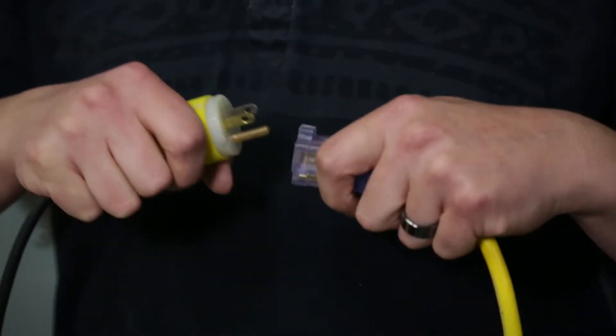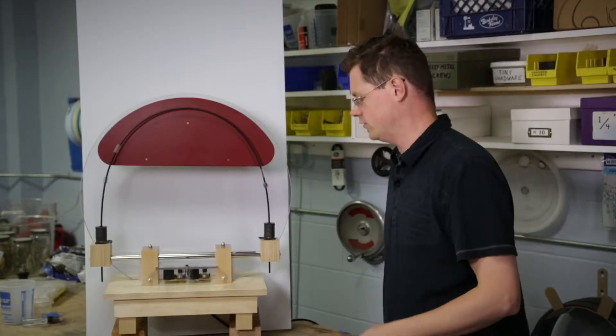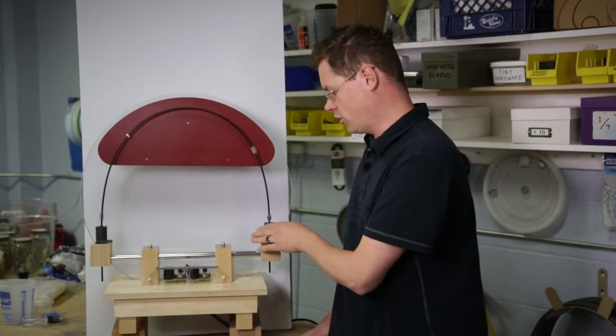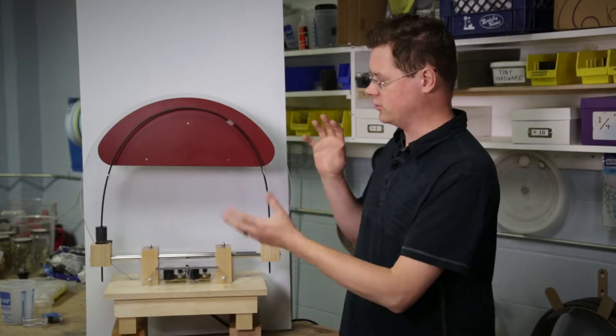Fun things happen when you power this thing up, so let's go ahead and do that. As you can see, the magnetic coils are generating electromagnetic pulses. Now the opposing forces of the magnets create this chaotic motion.